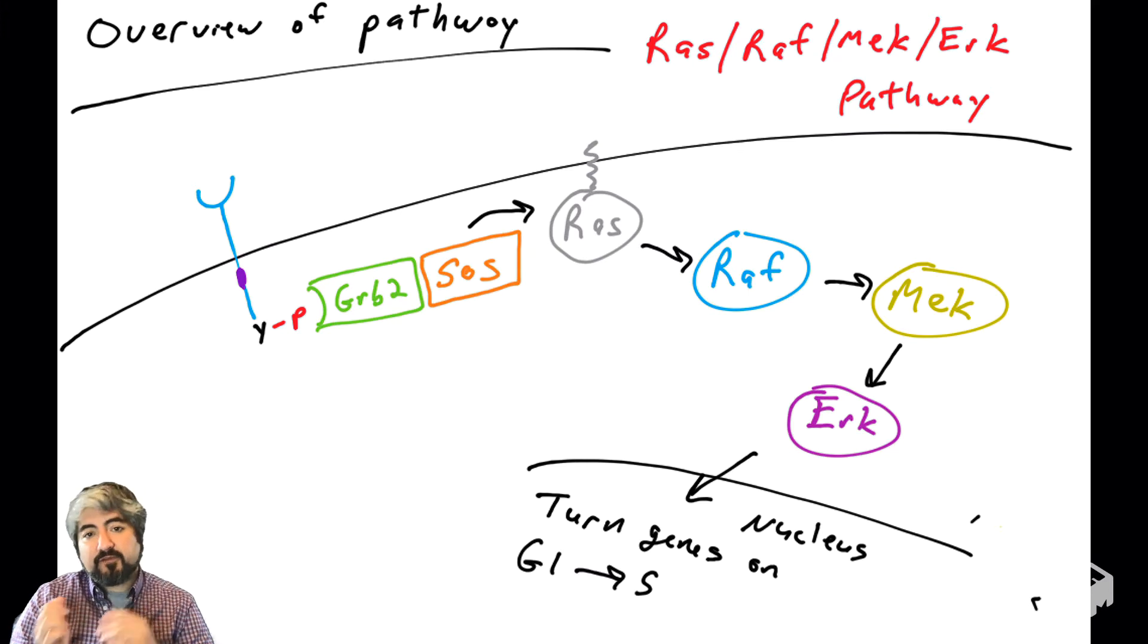There's an arrow between RAS and RAF, so RAS will regulate RAF. We'll have to talk about RAF and what it does, how it functions, how it's regulated, and how it's mutated in human cancers.